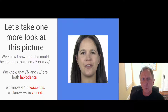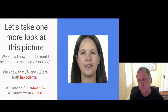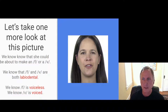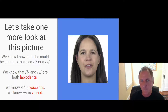Let's make sure we understand what we know so far. She could be about to make an F or a V, which tells us both are labiodental sounds — that's their place of articulation; they're both made at the same place. But they're different: F is made without vibration so it's a voiceless sound, and V is made with vibration so it's a voiced sound.